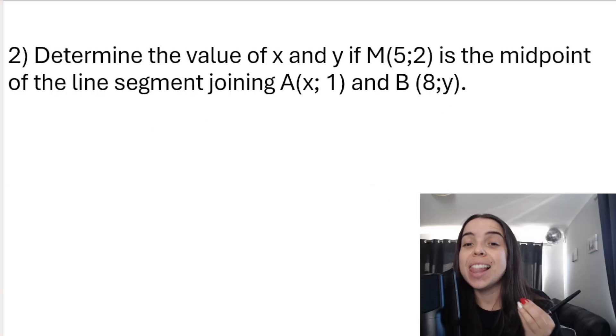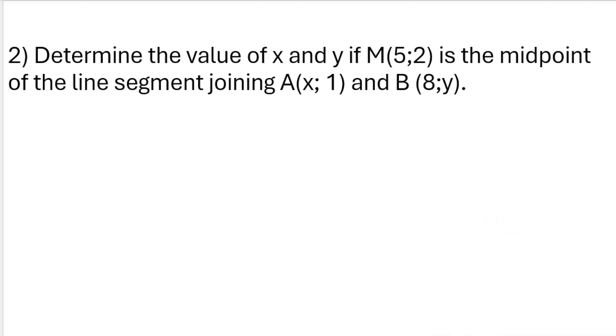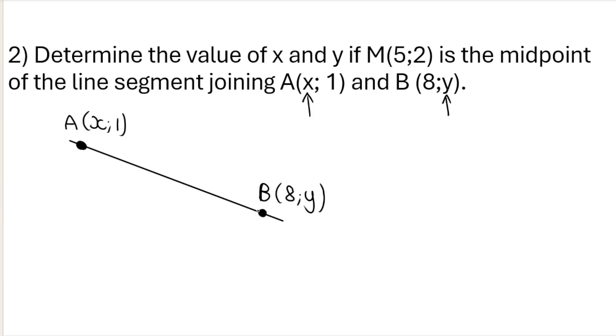Now what about a question like this? This is a working backwards question. This is a more difficult question, but it is important that you are able to do this, both in grade 10, 11, and in grade 12. So this question says determine the value of x and y. As you can see, x is part of coordinate A and y is part of coordinate B. If M is the midpoint, so we are giving you the midpoint of line segment joining A and B. If you want to see this visually, there we have points A and B, and in the middle of it, because it's a midpoint, would be M.